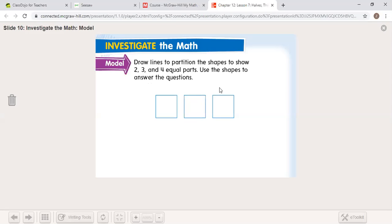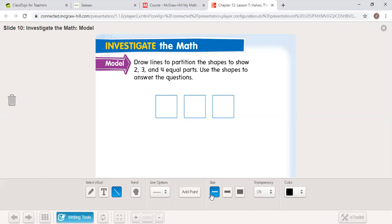Here, I need to show a square. With my square, I am going to partition the shapes to show two equal parts first. So I'm going to split it right down the middle. Could I have gone sideways? Absolutely. Now I need to show three equal parts.